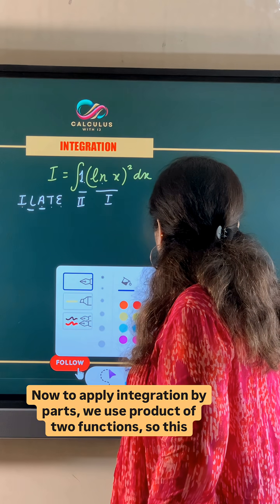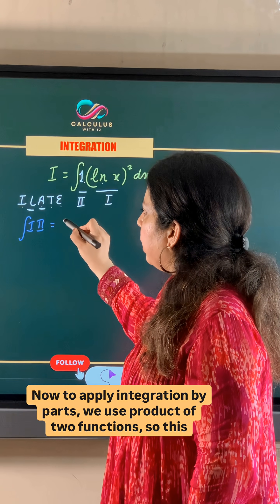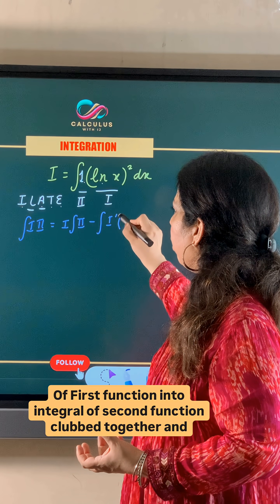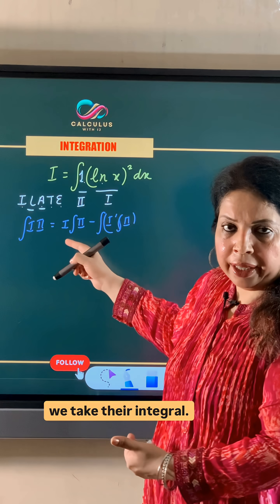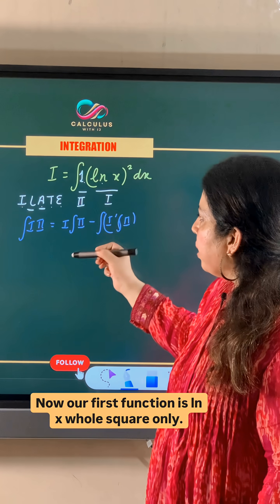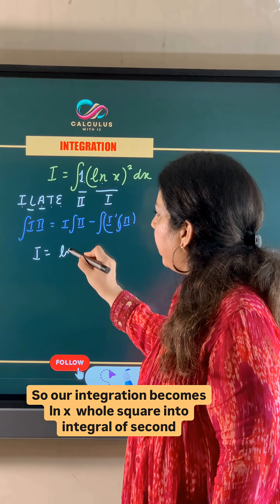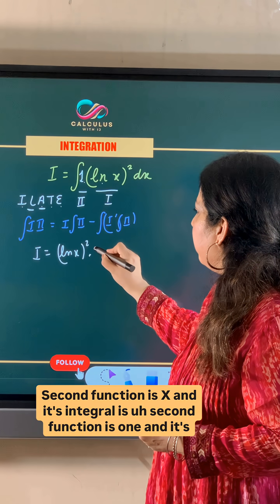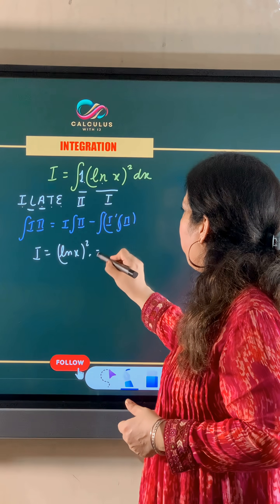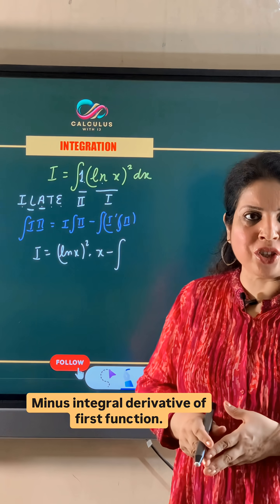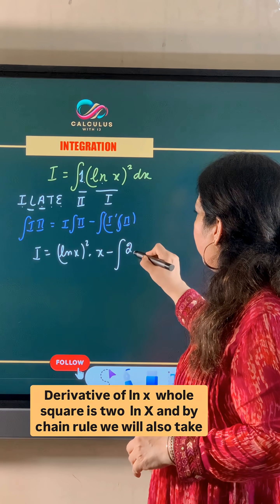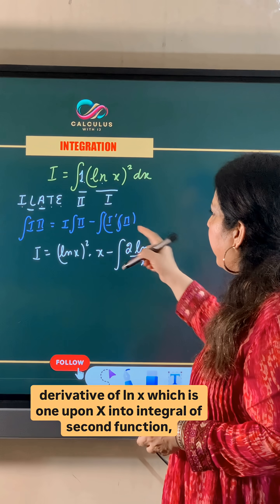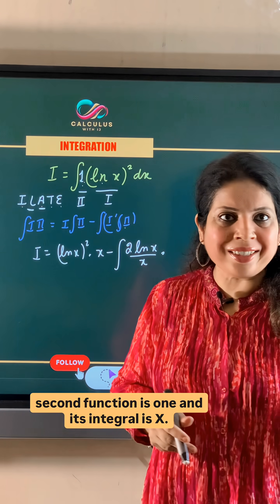To apply integration by parts we use the product of two functions: first function into the integral of second function, minus the integral of the derivative of first function into the integral of second function. Our first function is (ln x)² and the second function is 1, whose integral is x. The derivative of (ln x)² is 2 ln x, and by chain rule we also take the derivative of ln x, which is 1/x, multiplied by the integral of the second function, which is x.